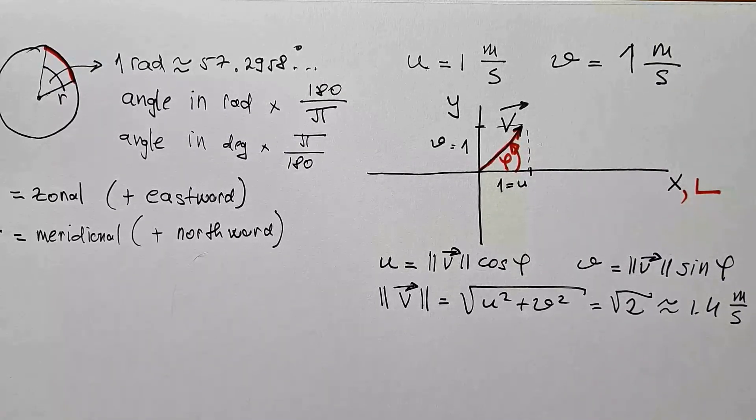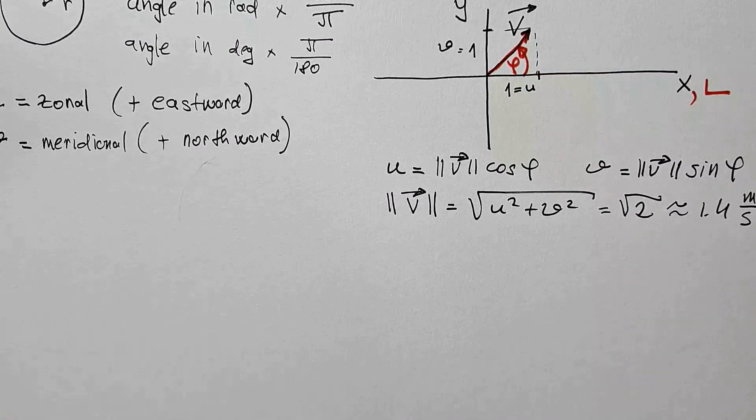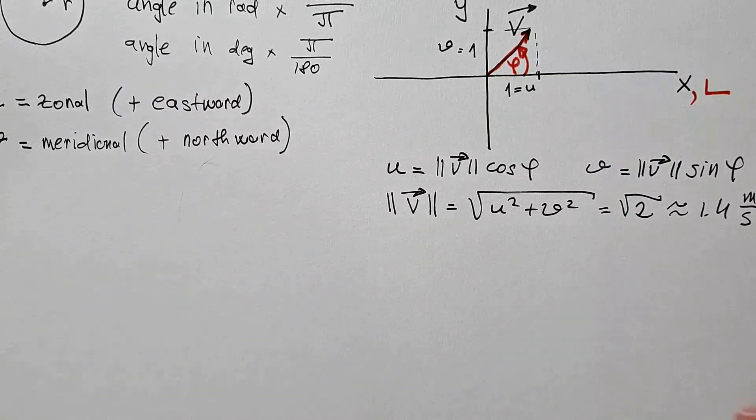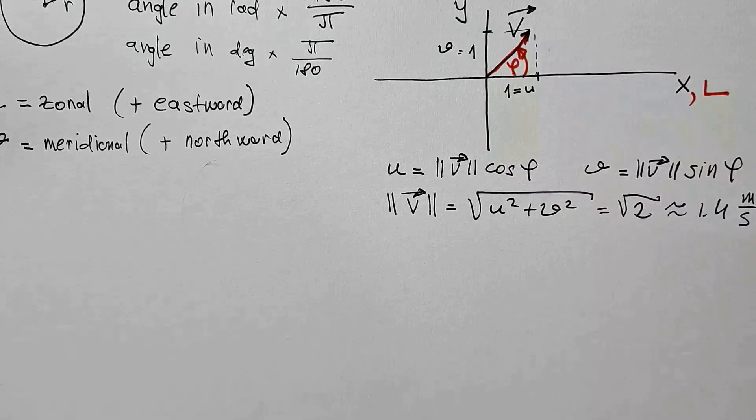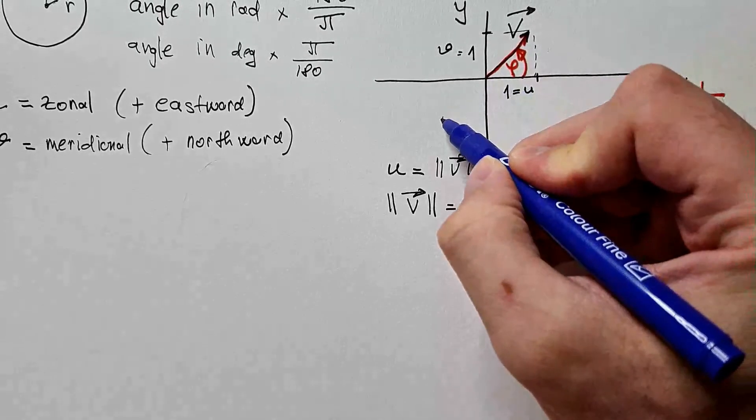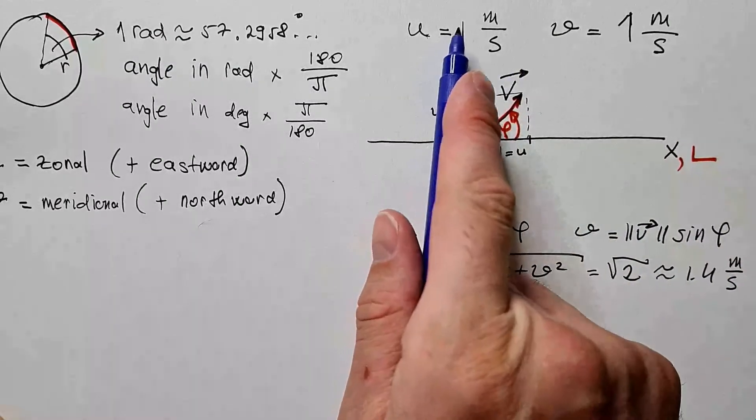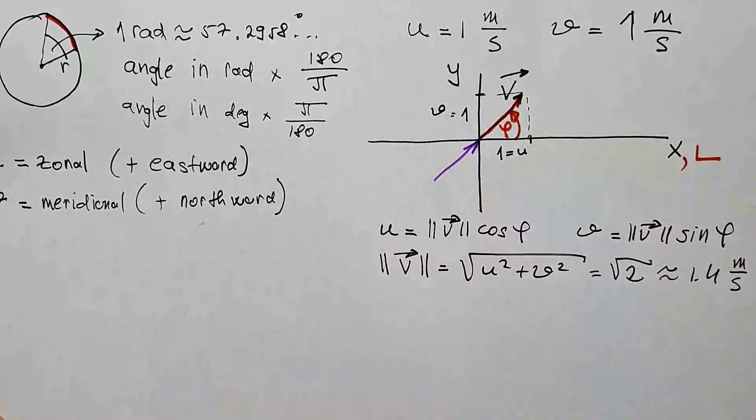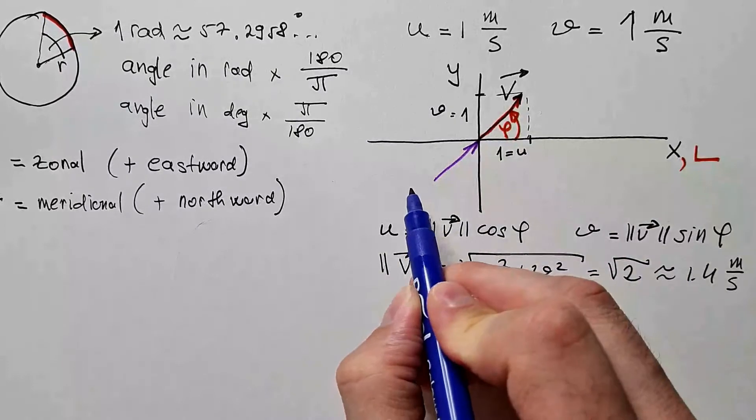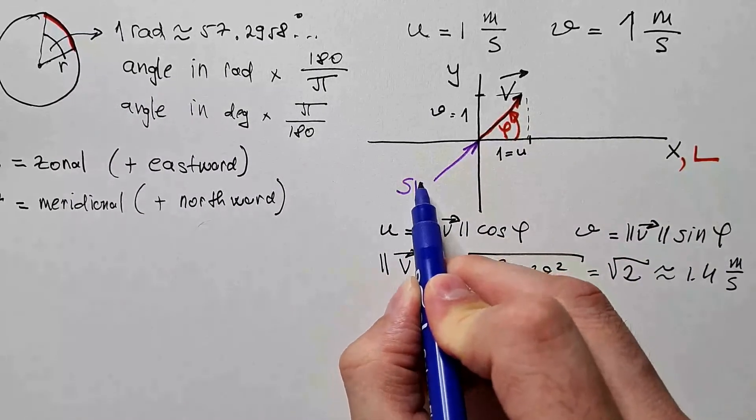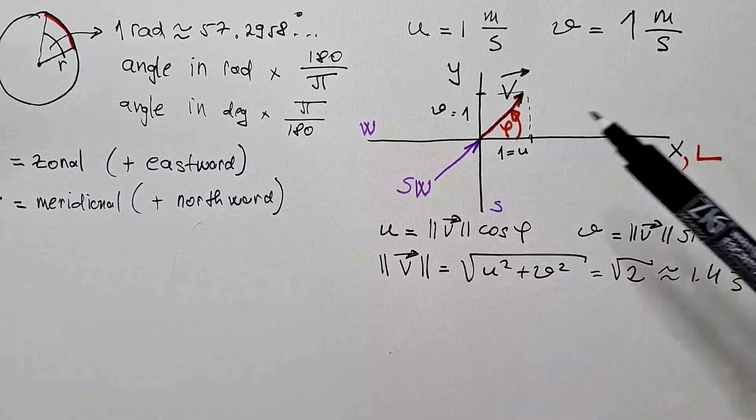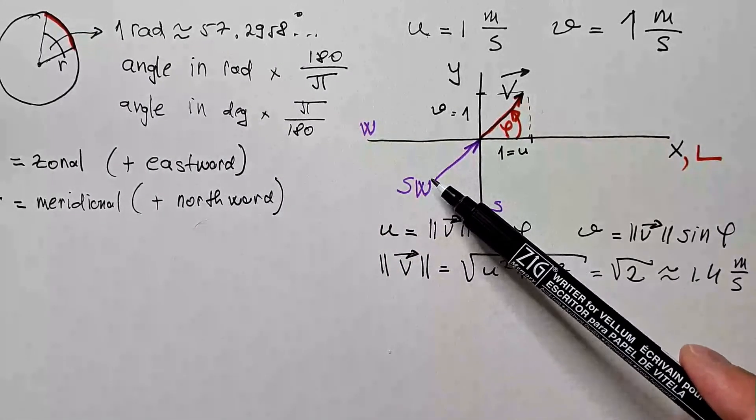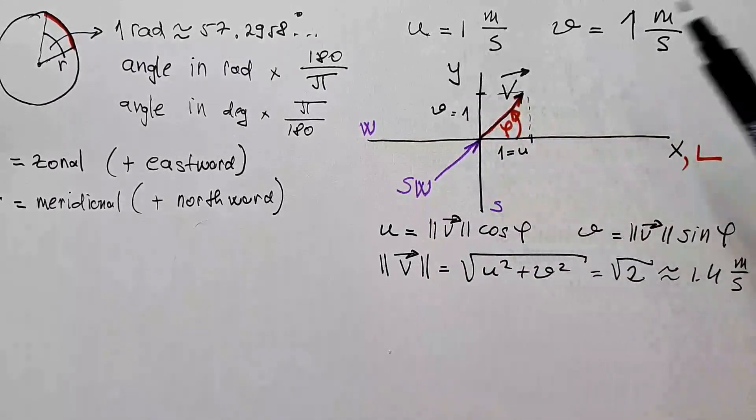But what about wind direction? Remember, by definition, wind direction is defined as the direction wind is blowing from. So this vector in terms of wind direction would be this. U equal 1 and V equal 1 m per second corresponds to south-west wind. Because this is south, this is west. All right, now, knowing all this information, how do we get wind direction from U and V components?